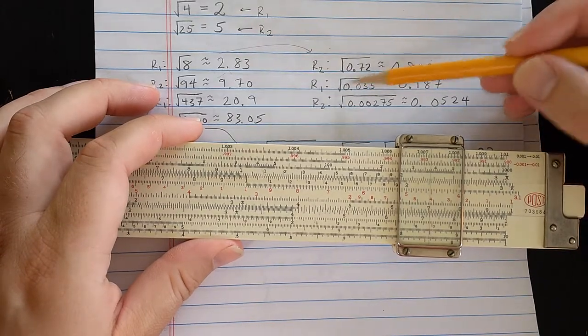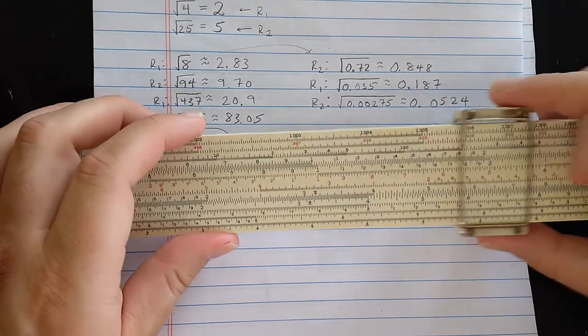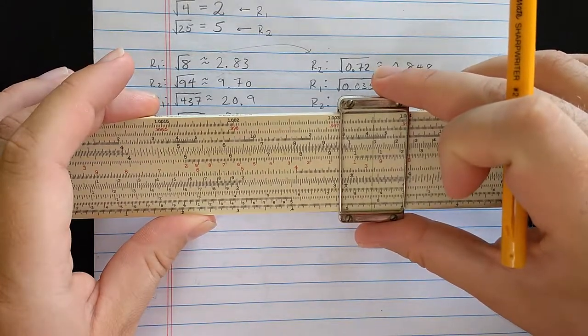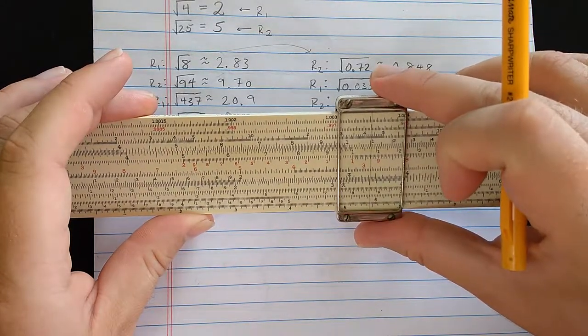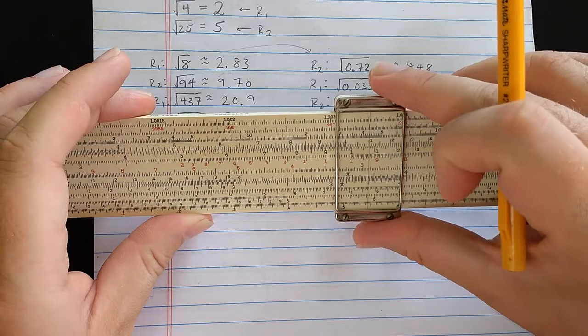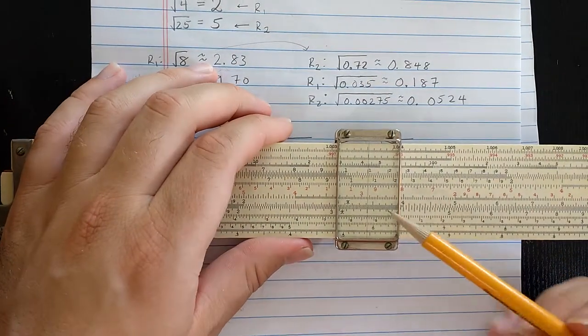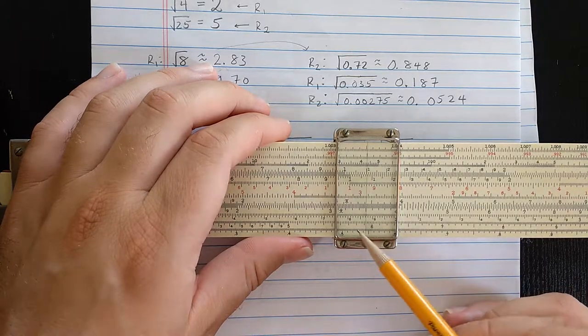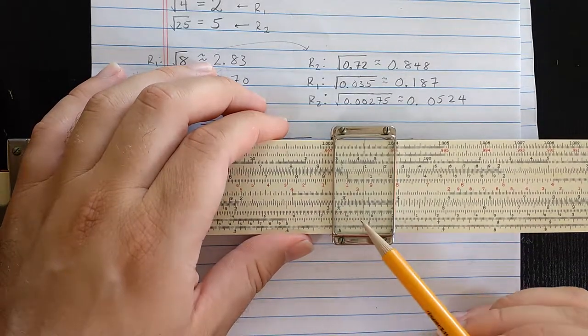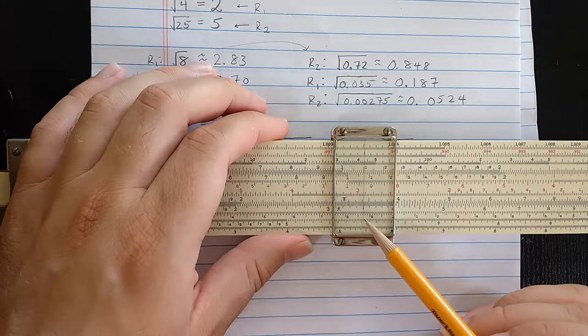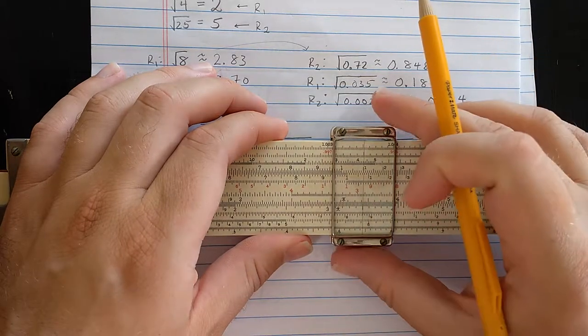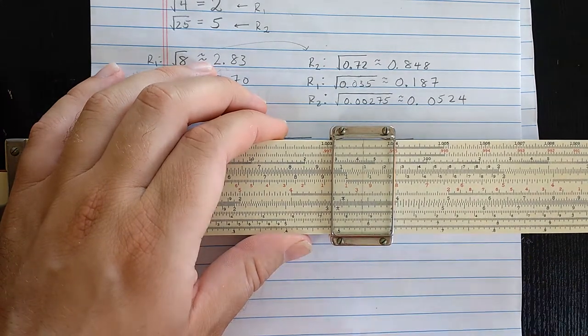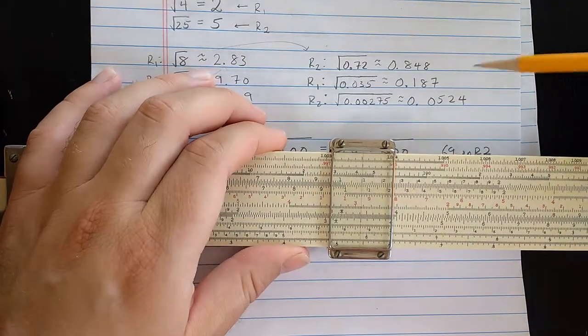Move the decimal one more place to 0.035. Let's set that on D. Then I should be reading that on R1, and let's see, so that's 1, 8, 5, 6, 7, 1, 8, 7. It looks like a little bit more than 1, 8, 7, depending on how good I've set the hairline.